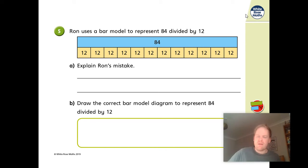Now, question five. Ron uses a bar model to represent 84 divided by 12. Now, a bar model is a big, long bar. You can see here with the 84 in it, just here. And then it's been split up into the sections that make up 12.